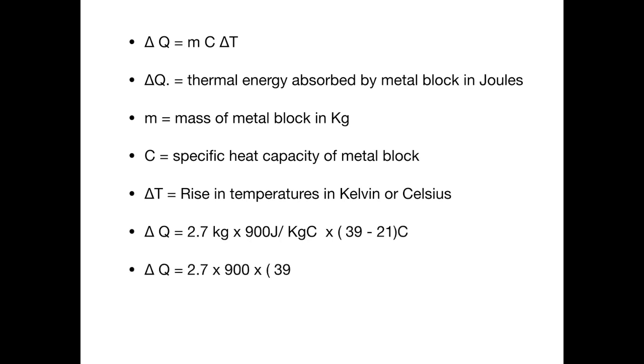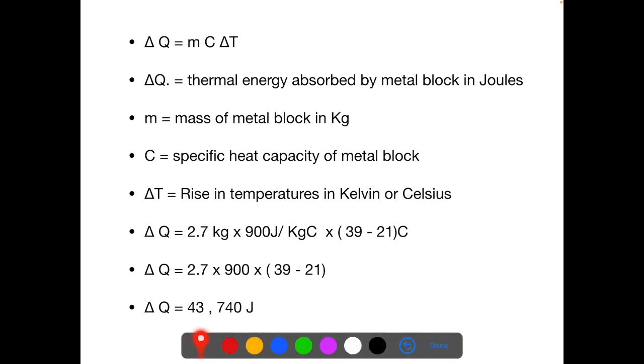Using the equation, we just plug in the values. Mass is 2.7 kilograms. The specific heat capacity is 900 joules per kilogram per centigrade into the difference of temperature, the raise in temperature, so 39 minus 21. I have written all the units; now I have skipped the units just to focus on the calculation. You can see 2.7 into 900 into 18 gives us 43,740 joules. This is the thermal energy absorbed by the metal block which was provided by the electric heater as shown in the diagram.